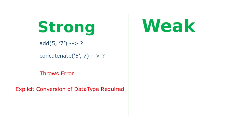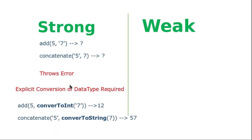A strong typing language tells you to explicitly perform the data type conversion. You must convert 7 into an integer and supply it to the add function, which will then calculate 5 plus 7 equals 12. Similarly, you convert 7 into a string and supply it to the concatenation function, which produces '57'. In a strong typing language, as a programmer you must explicitly convert to the required data type, otherwise the compiler immediately throws an error.